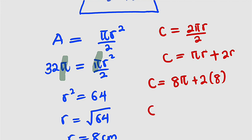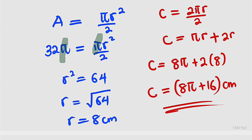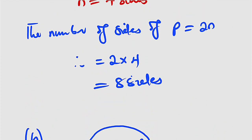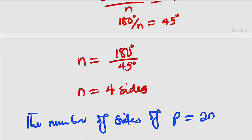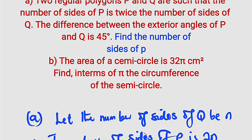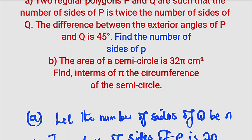Finally, the circumference equals 8π plus 16 centimeters. This is the solution to the second part. Thank you for watching — do share with your learning colleagues and don't forget to subscribe to my YouTube channel for more exciting videos. Now let us move on to question number 12.